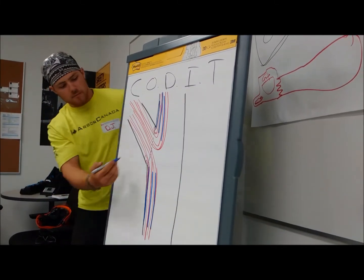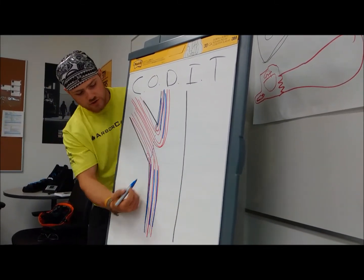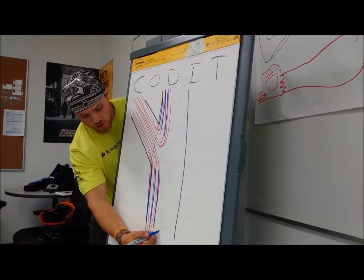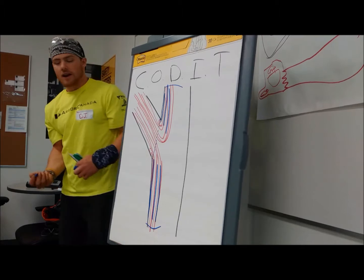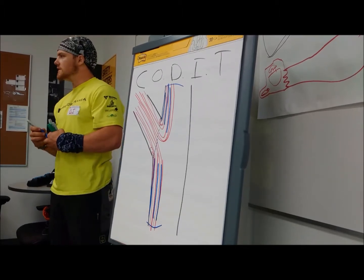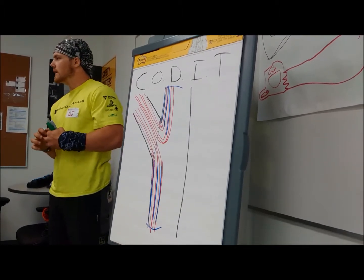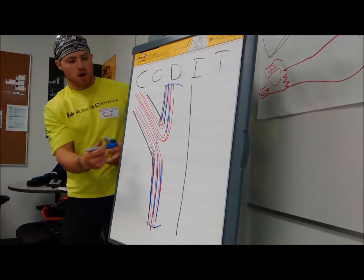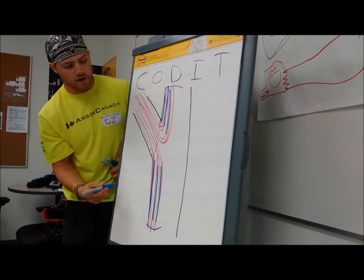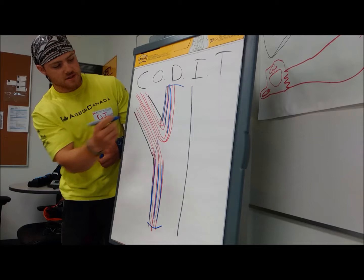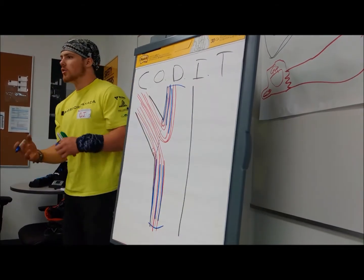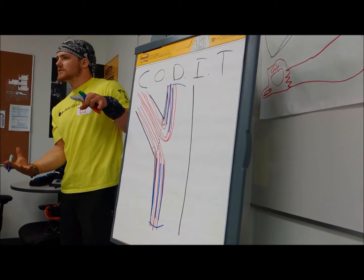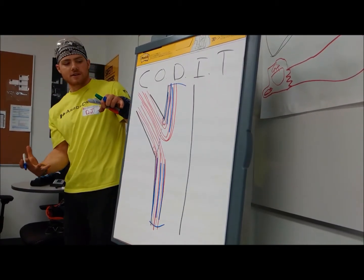By cutting flush to the trunk, we have exposed this much area to decay. We talked about heartwood and sapwood and how the center of the tree is more susceptible to that — we've exposed that much more area to decay.